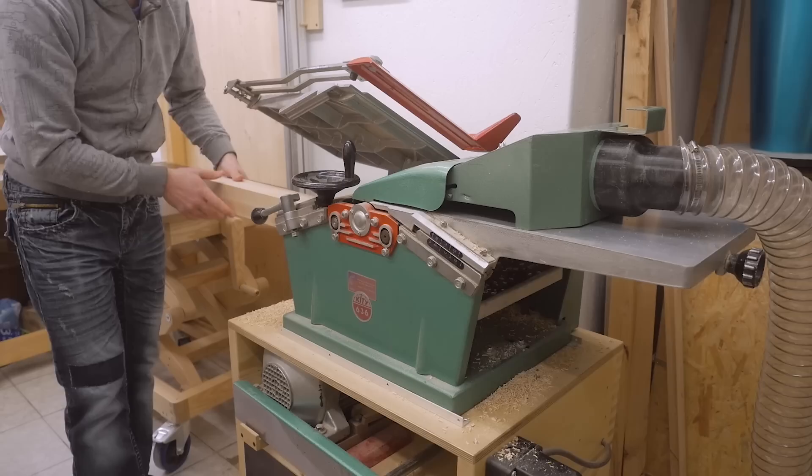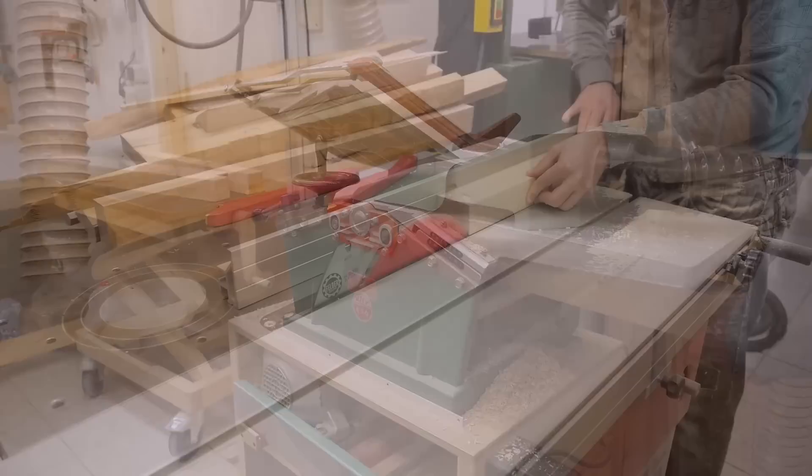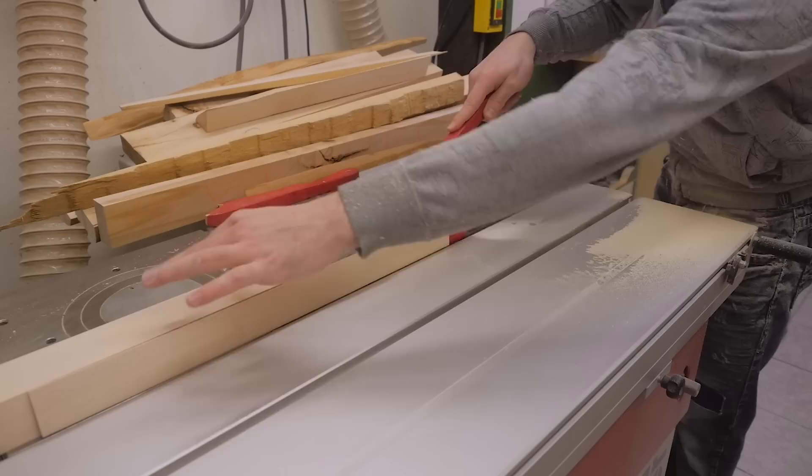Since the legs are square, I could cut all four sides with the jointer planer to size with just one setting of the planer. Then cutting the remaining pieces to width and then everything to length.